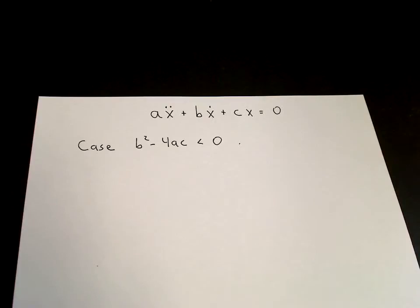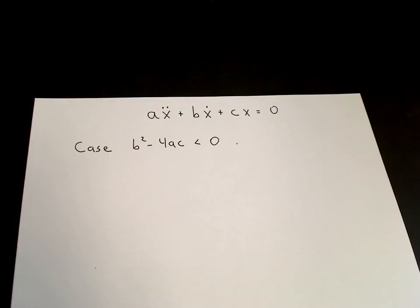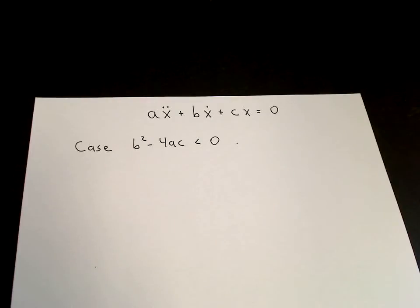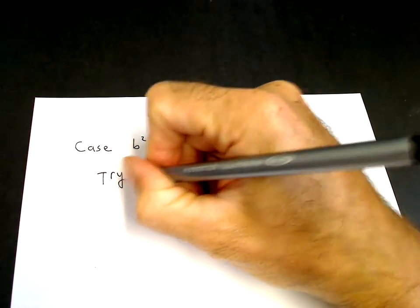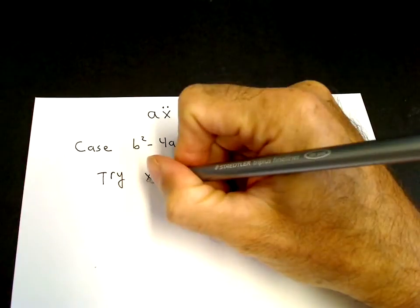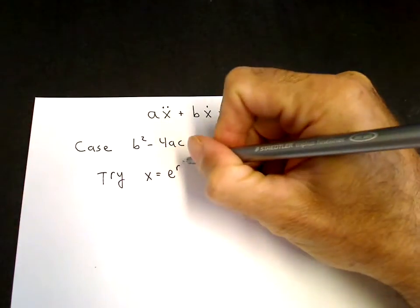In this video, we'll solve the second-order linear homogeneous equation with constant coefficients, and we'll consider the case of two complex conjugate roots — that's b squared minus 4ac negative. So with our usual ansatz x equals e to the rt,